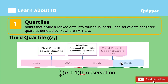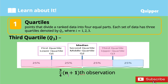Next, we have the third quartile, or Q sub 3. It is a number such that 75% of the data are smaller in value compared to Q sub 3. It represents the middle value of all values to the right side of the median. It is also called the upper quartile. If there are n observations in a set of data, the third quartile is the three-fourths of (n + 1) observation when the data are arranged ascendingly.